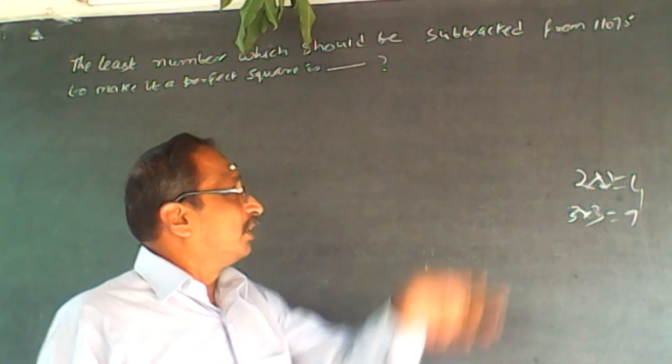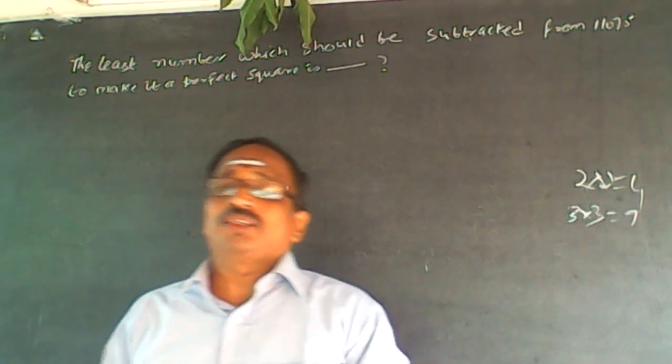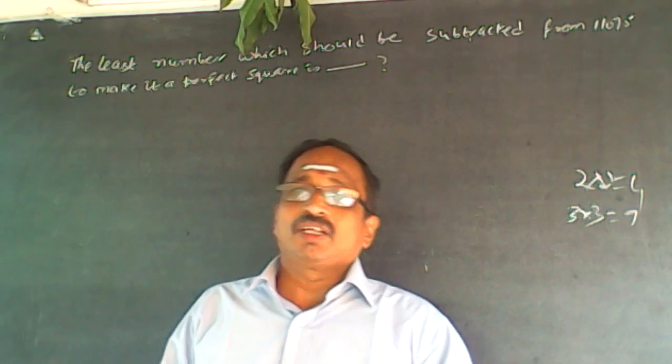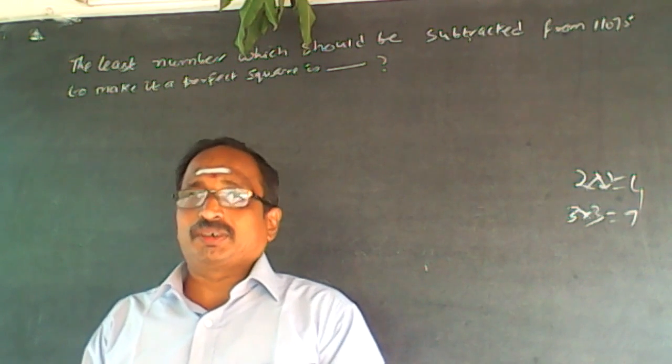Now what happens is 11075. You cannot remember all the square numbers. You cannot do something faster to get the square numbers. It is practically very difficult for anyone to remember all the square numbers.